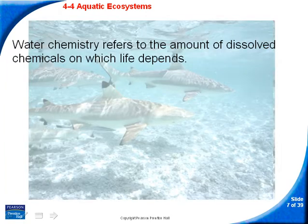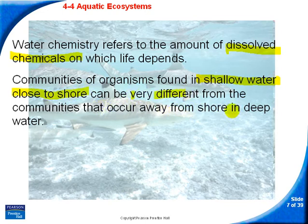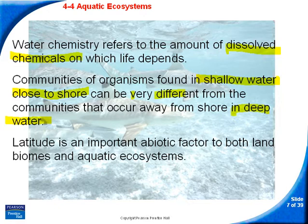Water chemistry refers to what's dissolved inside the water. Another important overall factor is that what you find in shallow water close to shore is going to be very different from what's in deep water. Latitude is also an important abiotic factor — just as on land, the further north you go, the colder it gets.